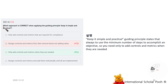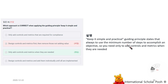Which approach is correct when applying the guiding principle Keep It Simple and Practical? Only add controls and metrics when they are needed. Keep It Simple and Practical states that you should always use the minimum number of steps to accomplish an objective, so you only need to add controls and metrics when they are needed.